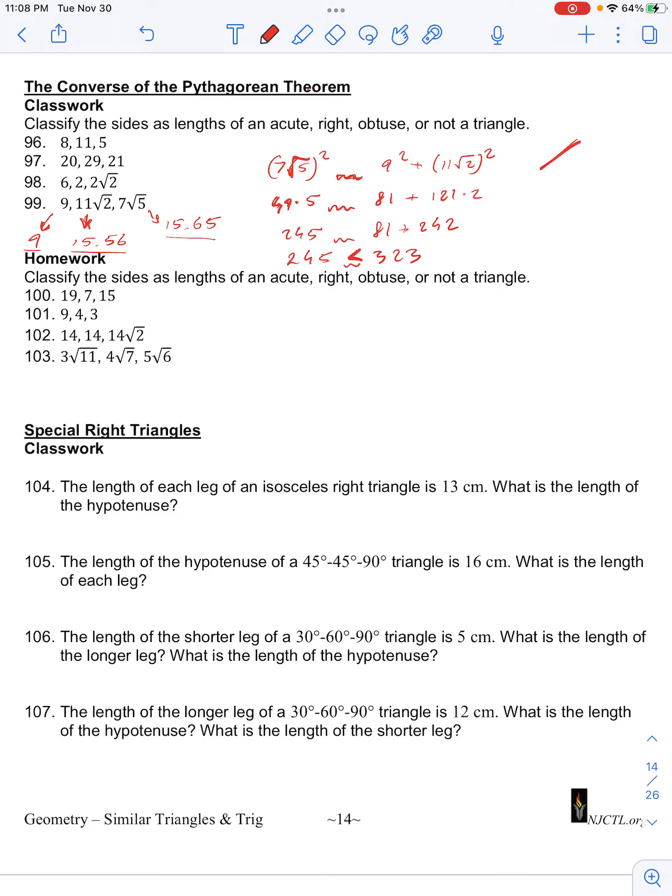So what this means is that the two shorter sides are longer than what they're supposed to be in order to form a right triangle.